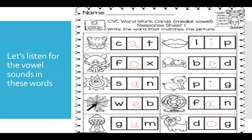So let's review: cat, fox, sun, web, gum, lip, bed, pig, fan, dog. And today we practiced with the short vowel sounds in the middle.